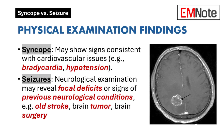Physical Examination Findings: A physical examination of a patient with syncope may reveal signs consistent with cardiovascular issues, such as bradycardia or hypotension. In contrast, a neurological examination of a patient with seizures may identify focal neurological deficits or signs of underlying neurological conditions.